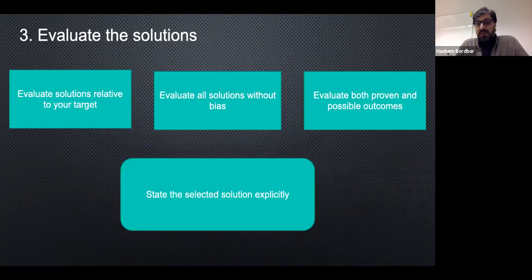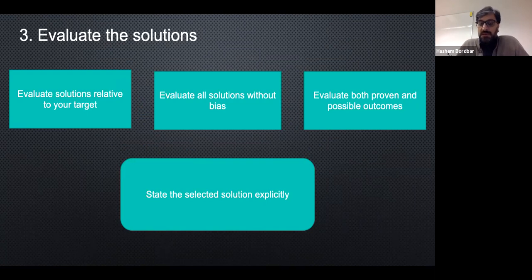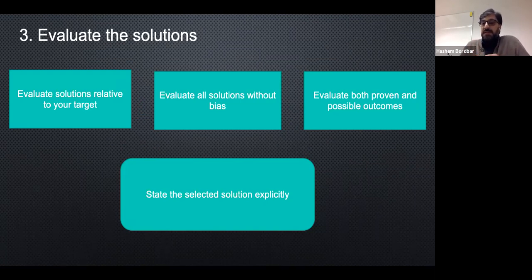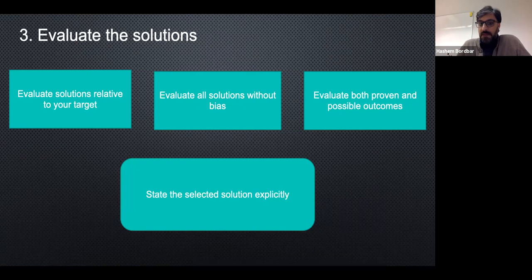In step four, we should evaluate the solutions relative to your target. Evaluate all solutions without bias — this is very important. We should be honest to ourselves and evaluate without any bias. We should remember that expectation and reality are different from each other. Evaluate all possible solutions and state the selected solution explicitly. These are a quick review of the first, second, third, and fourth steps in solving a problem.